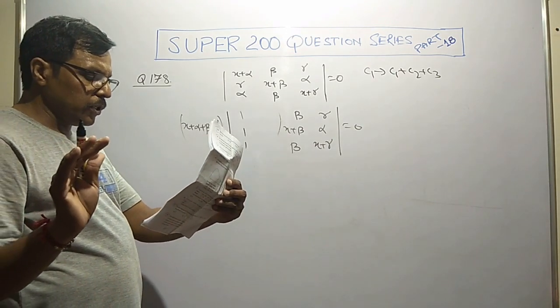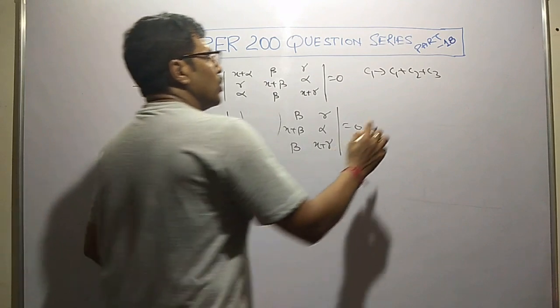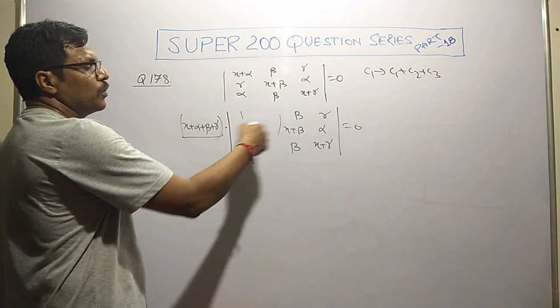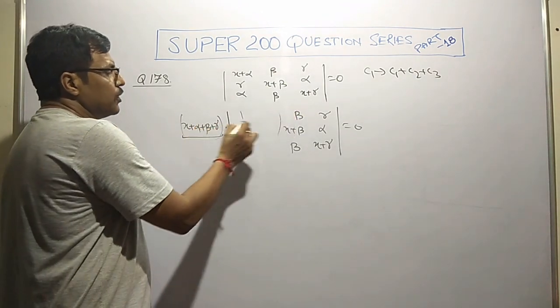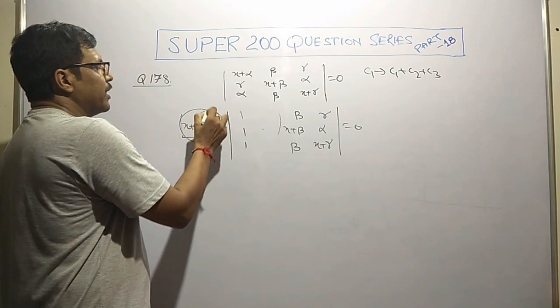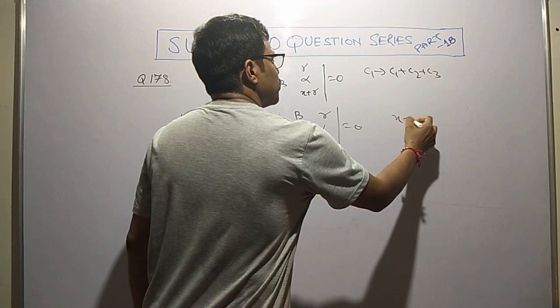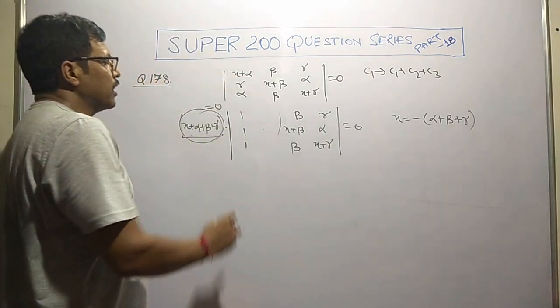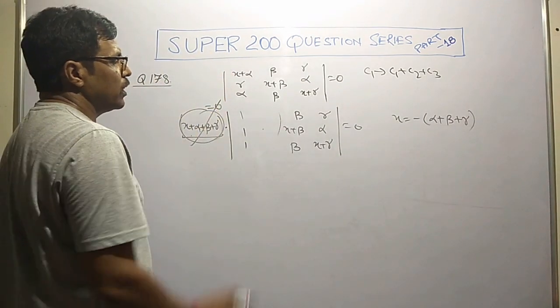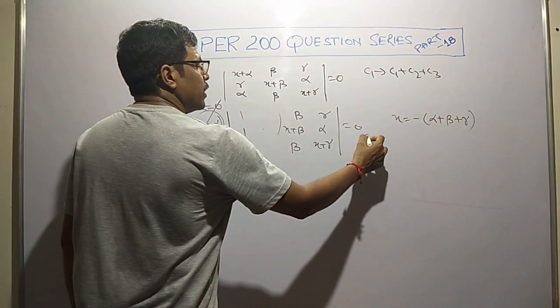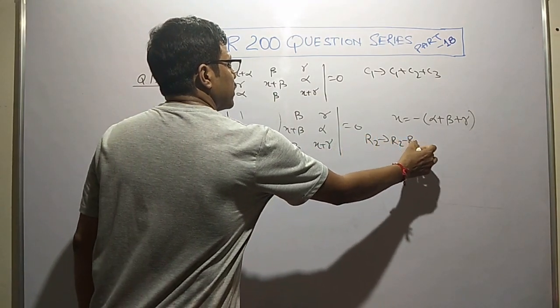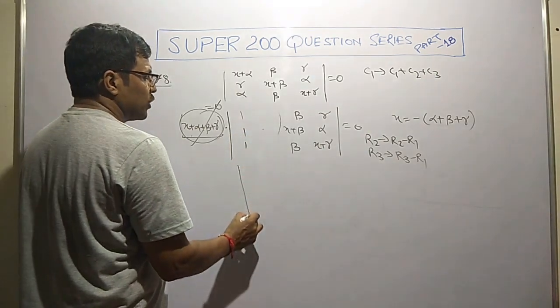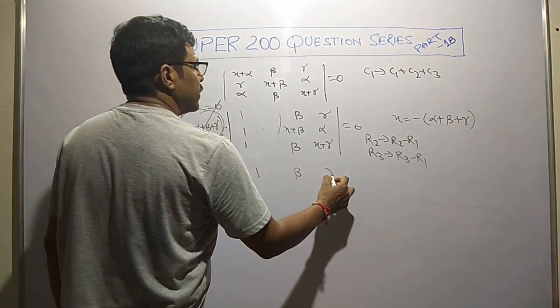Now, four options are given, showing the product of these two is zero. So either this zero or that zero. Putting x plus alpha plus beta plus gamma equals zero gives one solution.